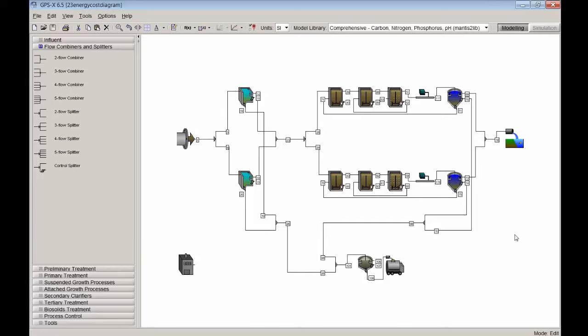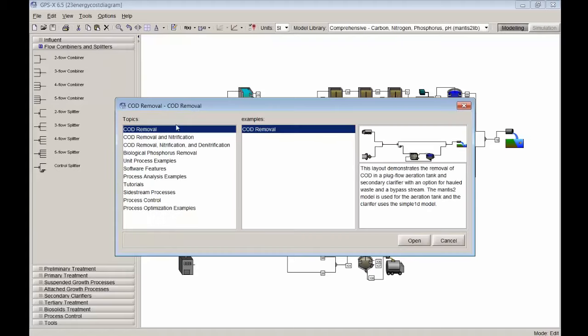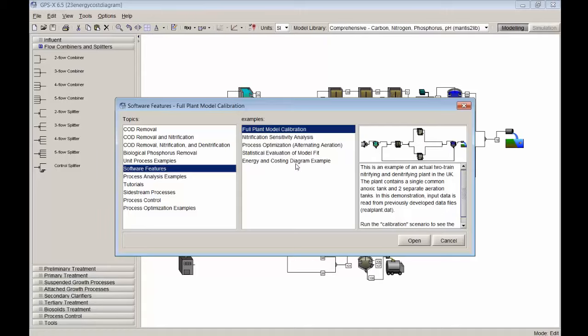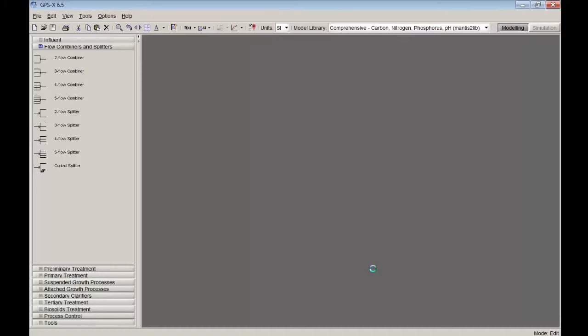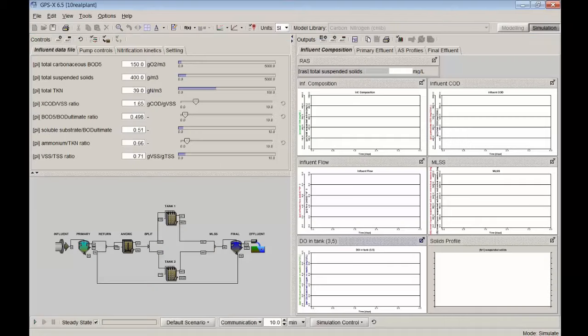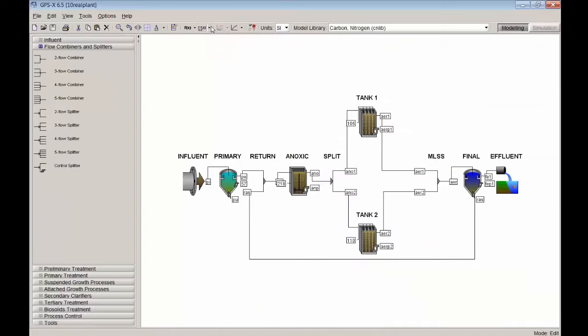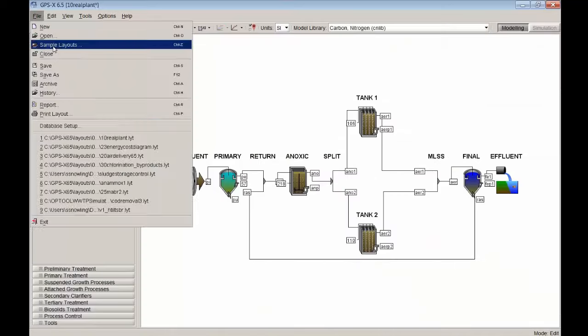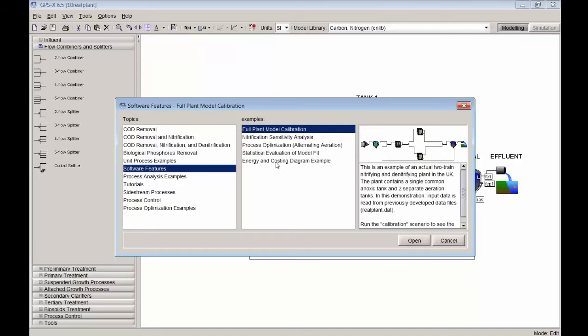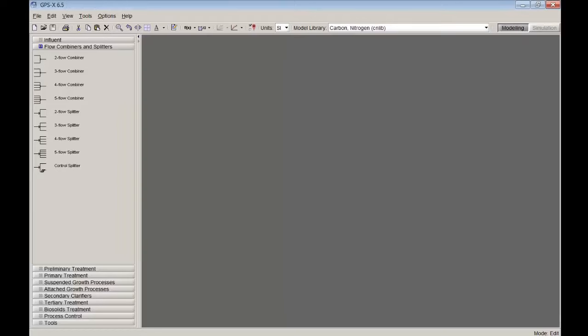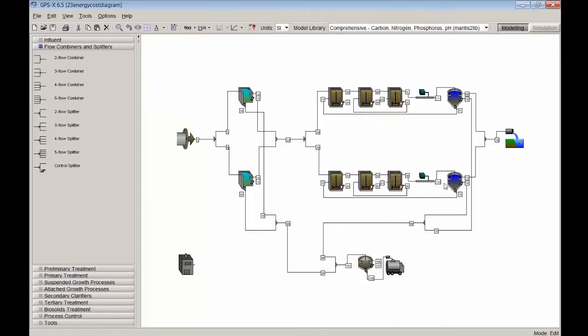So let's take a look at that energy usage button first. I'm going to actually run some simulations here. This is an example that comes from our sample layouts menu. If I go down here to software features and I go to this energy and costing diagram example, this is a very simple straightforward activated sludge plant although it's doing nitrification and denitrification. This plant is actually an MLE process. There's two parallel trains. There's the ferric dosing units here for doing the phosphorus removal.